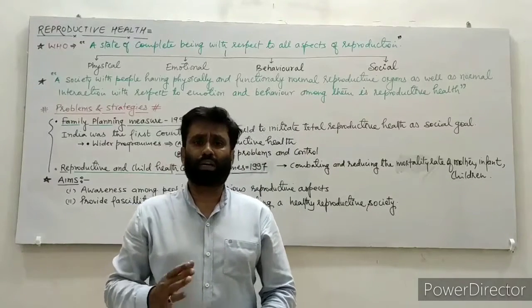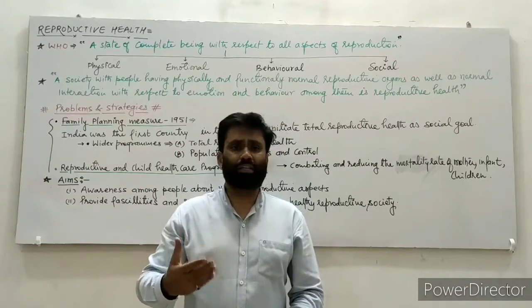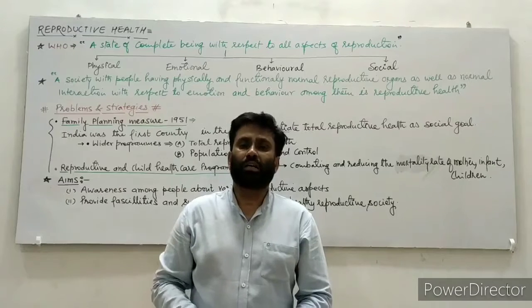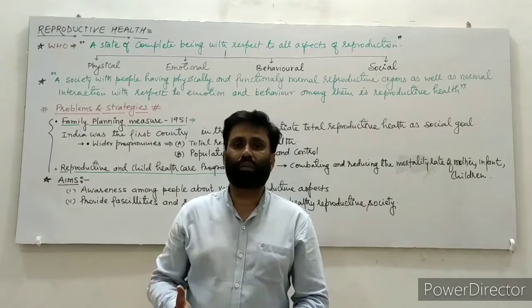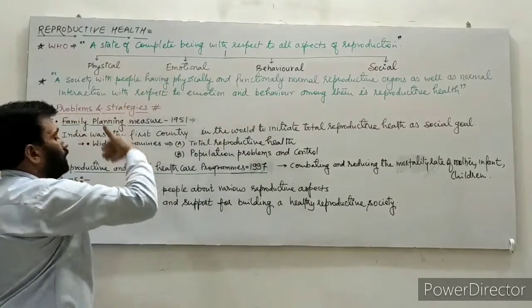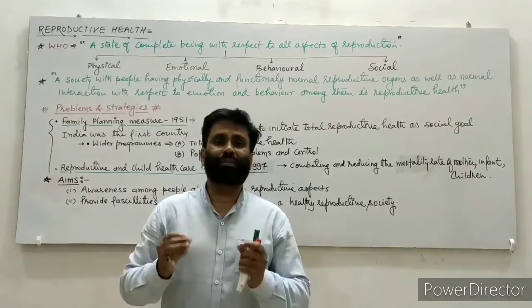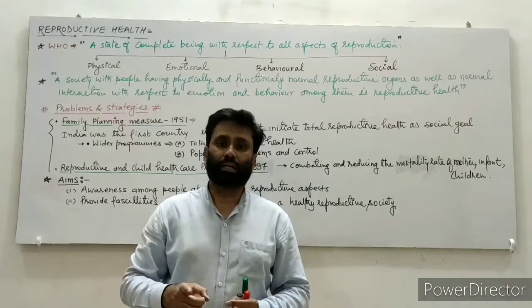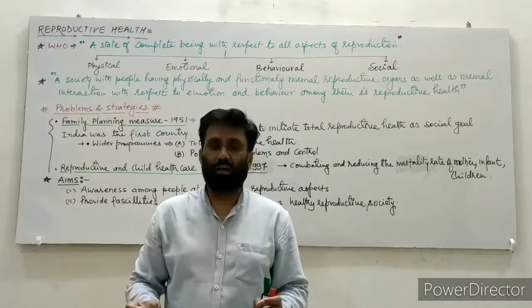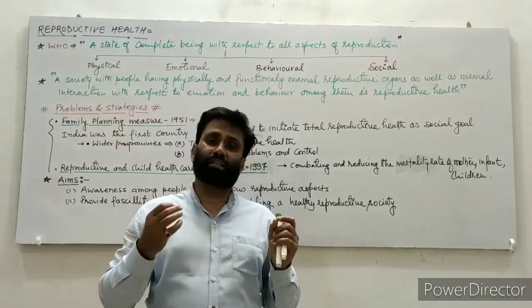Reproduction is a process — a process to generate living organisms. Along with this, the partners involved in reproduction also have emotions, behaviors, and physical health involved. So overall, we are talking about physical health, mental health, social, and economic well-being. All of these are considered complete when the aspects of reproduction are fulfilled with them.